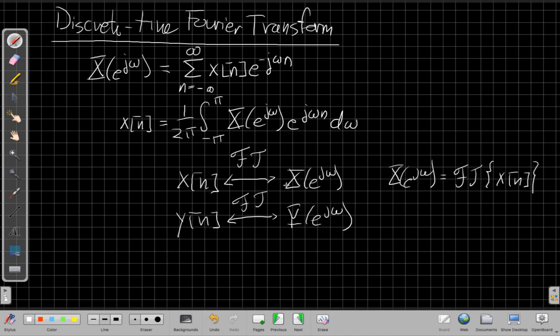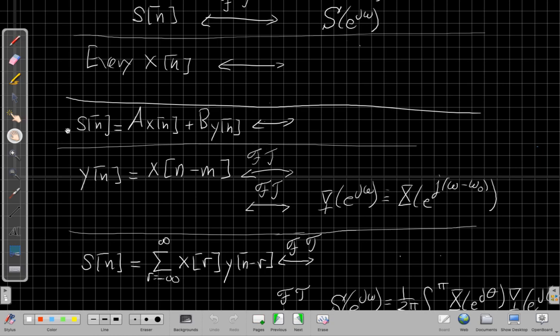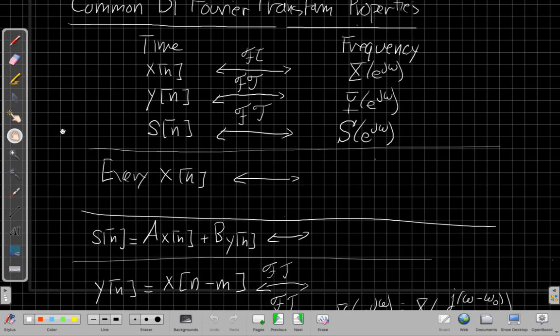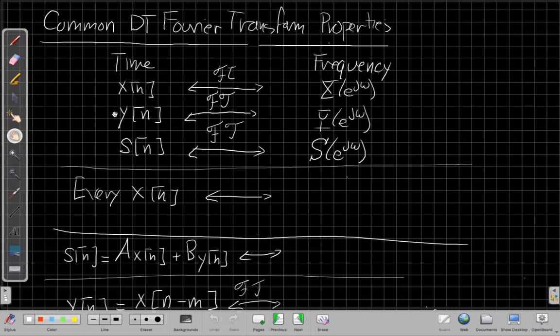It's a common convention that we match the letters, that we use lowercase in time and uppercase for frequency, sort of to give our brains a clue that if the omega wasn't enough, that this uppercase means that we're now living in the frequency side. Let's talk about some of the properties here. These are common properties that will transform properties we'll see a lot in the class.